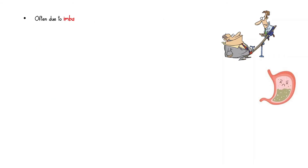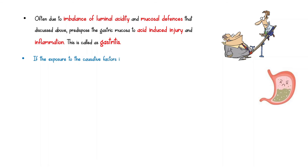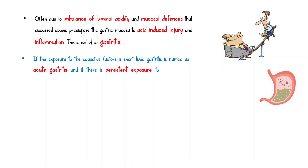Often, an imbalance of luminal acidity and mucosal defense predisposes the gastric mucosa to acid-induced injury and inflammation. This is called gastritis. If the exposure to causative factors is short-lived, gastritis is named acute gastritis. If there is persistent exposure to the causative factors, it is called chronic gastritis.